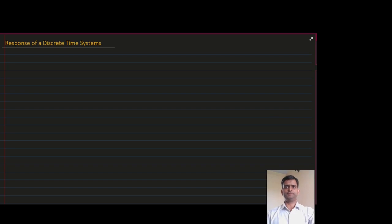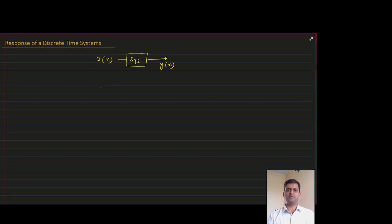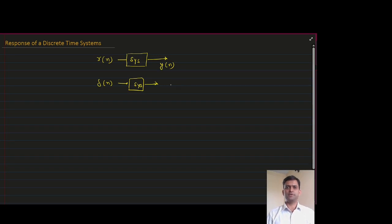Response of discrete time system. Suppose I have input X and a discrete time system. This discrete time system is giving output Y. If this input is an impulse signal delta N, then the system will provide the output corresponding to the impulse signal. The output corresponding to the impulse signal is called impulse response.